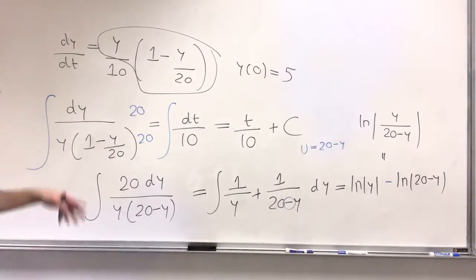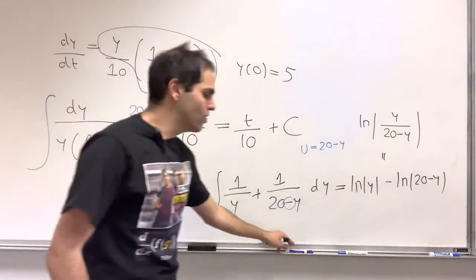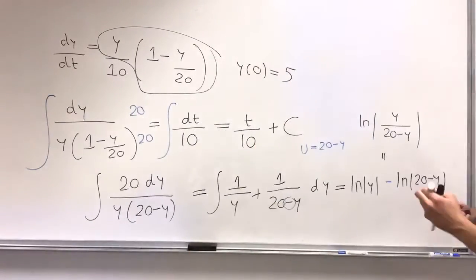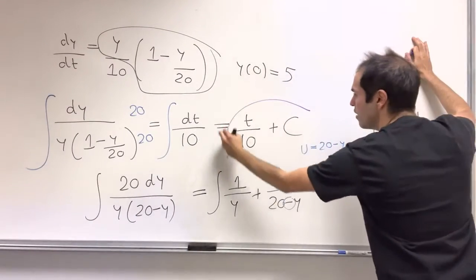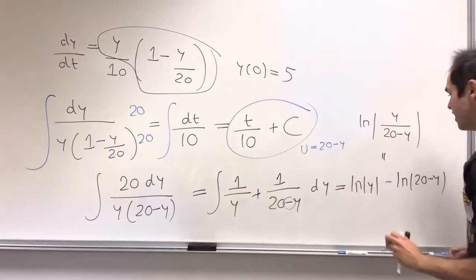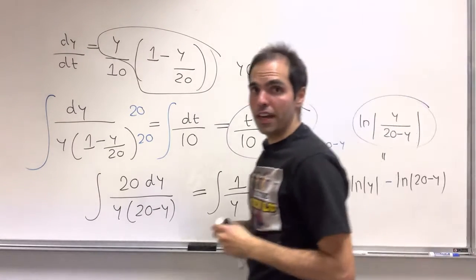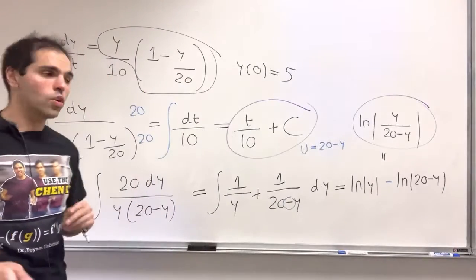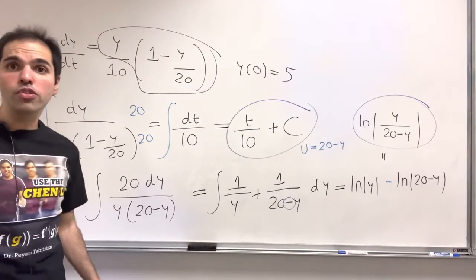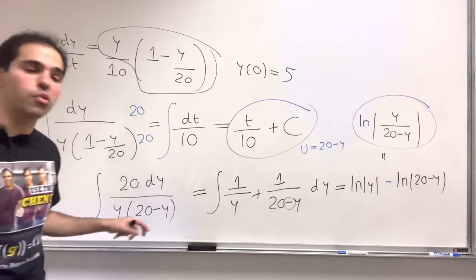So again, to summarize, after the separation of variables, what do we get? On the one hand, we have t over 10 plus c. On the other hand, we have ln of this absolute value. So those are the two separate contributions, and let's just set them equal to each other.